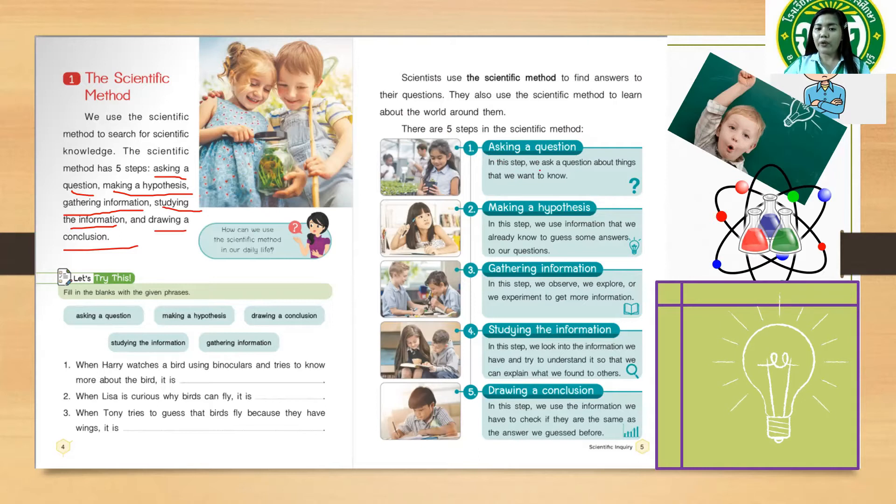In this step, we ask a question about things that we want to know. So you are going to ask a question. For example, you are curious about a red ant. So you are going to ask a question: what does a red ant look like?